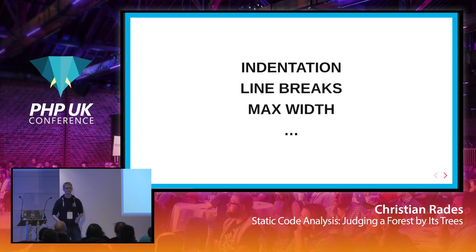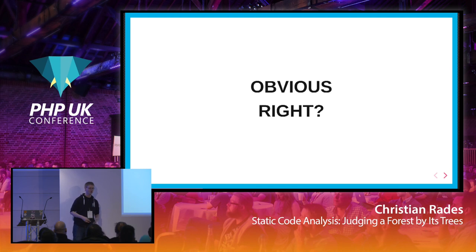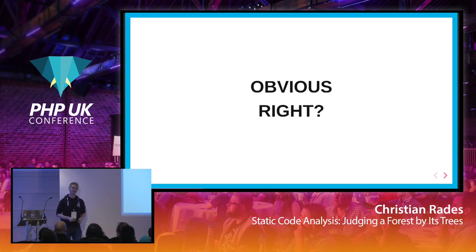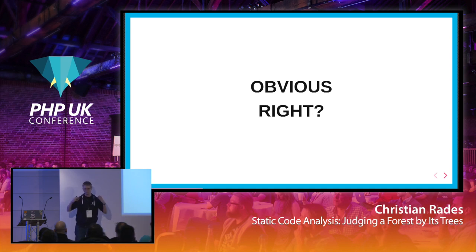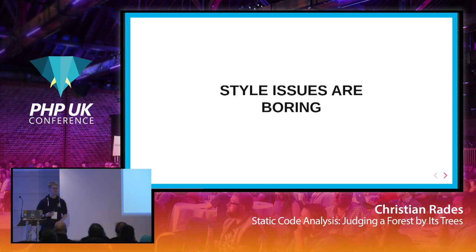You've got stuff like indentation, line breaks, maximum line width, the occasional stray space. It's hard to get right because in a code review you only have a limited amount of time to do concentrated code reading. Every second you spend thinking about whether a space is too much, or indentation is off, means you lose concentrated time thinking about data flow and the general idea of what the pull request is trying to do.